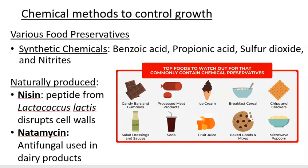Food preservatives include various synthetic chemicals like sodium benzoate, propionic acid, sulfites, and nitrites added to foods to inhibit microbial growth. If these affect microbes, we might wonder about their effect on us — they may not penetrate the intestinal lumen, or the amounts are too small to affect us given the large number of our own cells. The long-term effects are not fully known.